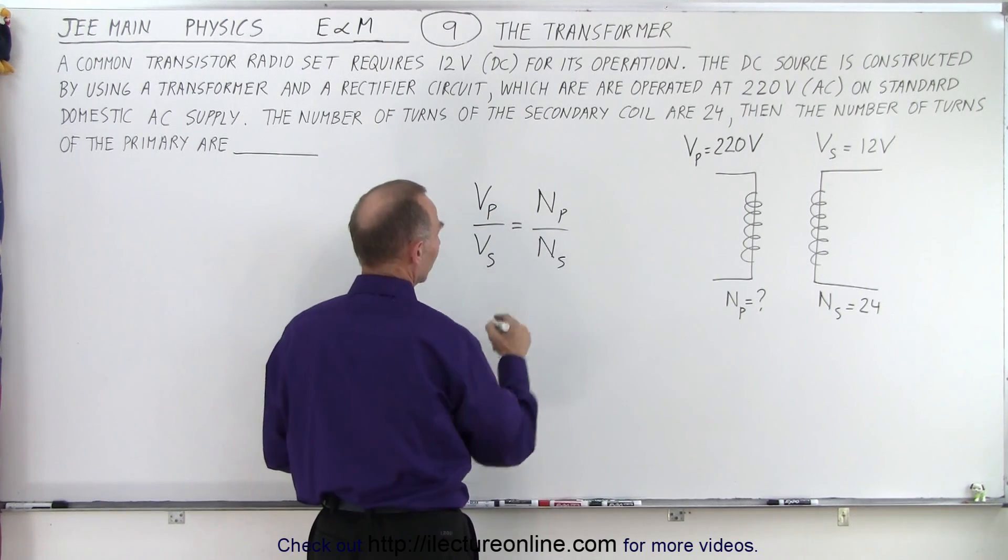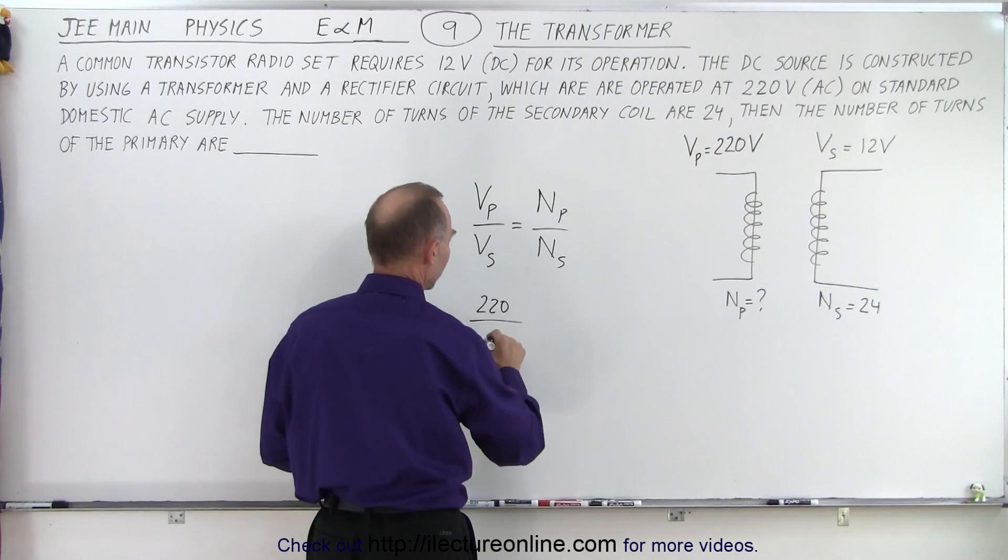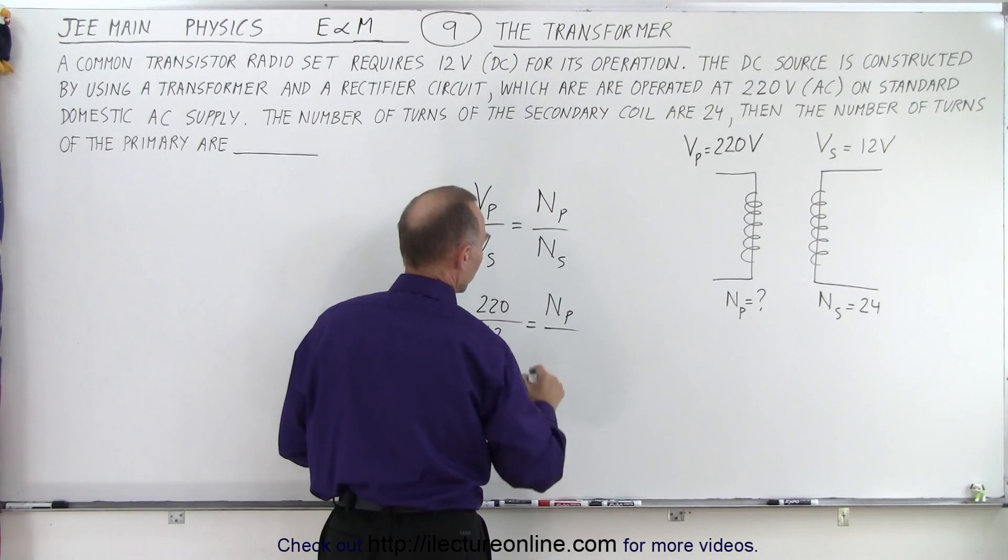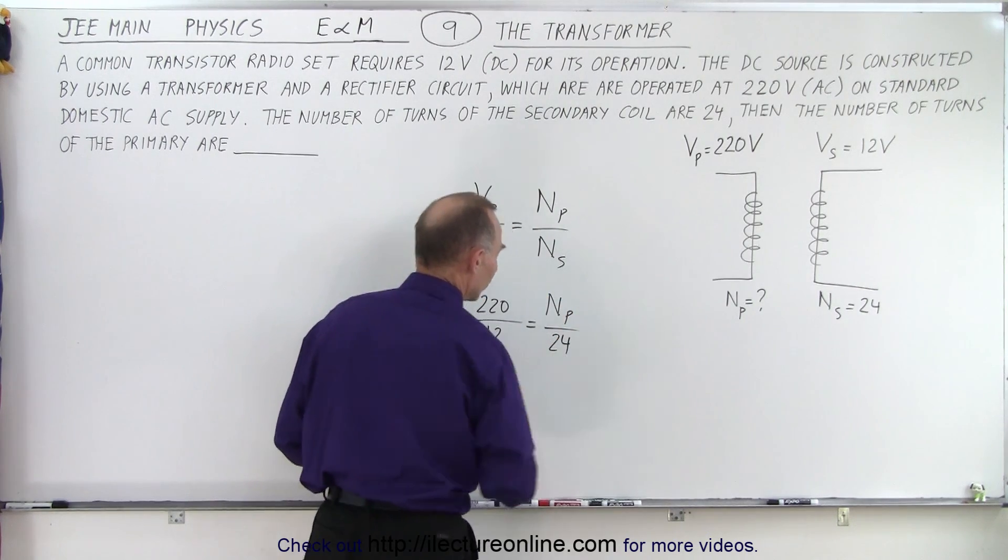We're looking for this. Everything else is given. So the primary is 220 volts, secondary is 12 volts, number of turns of the secondary is 24.